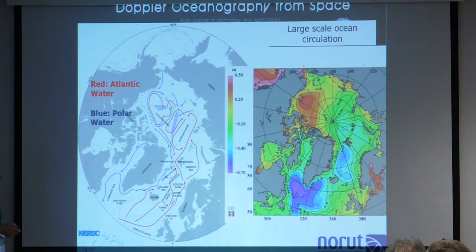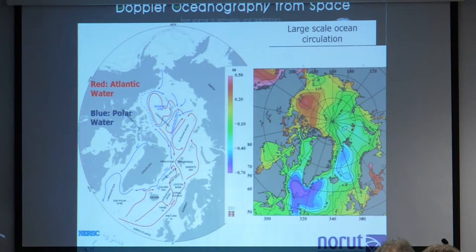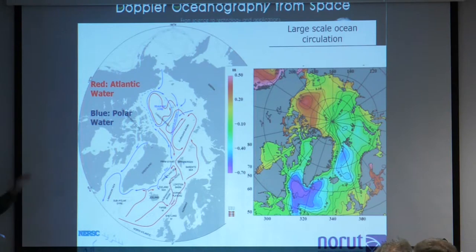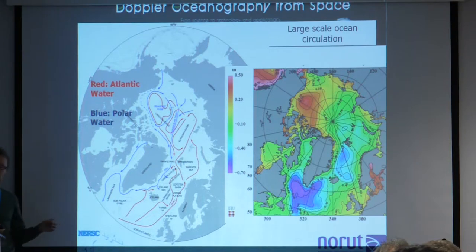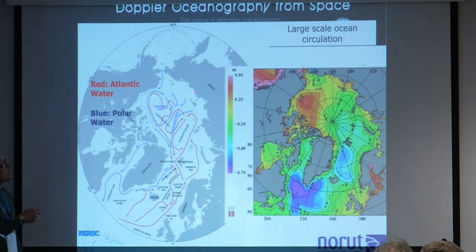When you look at the mean dynamic topography from the GOCE mission, which Marie-Elaine and Ola Andersen were involved with, it illustrates something remarkable. This map is done completely from observations — sputter data, satellite, and in situ — and it illustrates the Beaufort Gyre, the transpolar drift, and the inflow of Atlantic water. In the mean dynamic topography you find them all, meaning the ocean has a lot to say for this circulation regime and the way the ice is moved around.